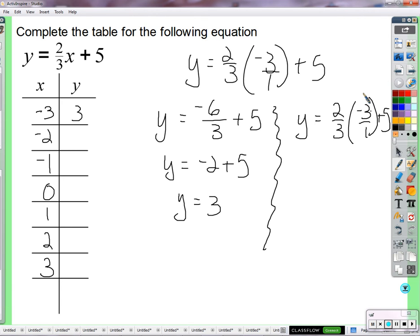So 2 thirds times negative 3 over 1, we could, instead of multiplying them together, we could also just, at this step, divide the 3s. This 3 divides this negative 3, leaving it negative 1. And now the denominator is 1, and we can just multiply 2 times negative 1, you get negative 2. And we still get 3, of course.